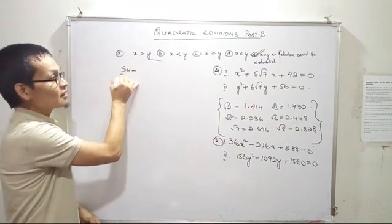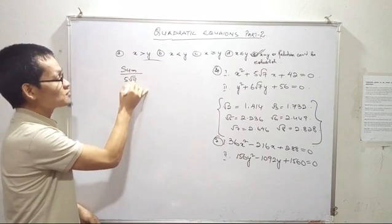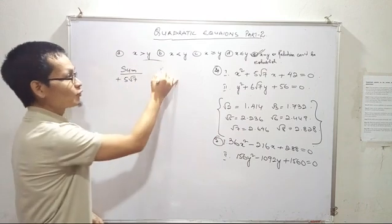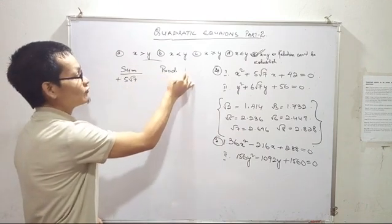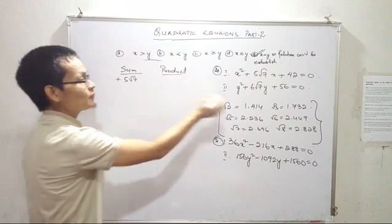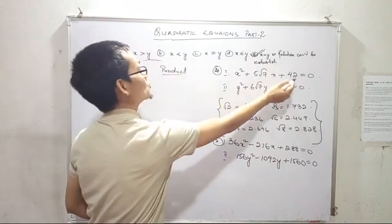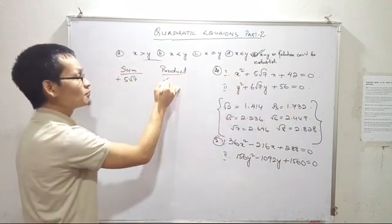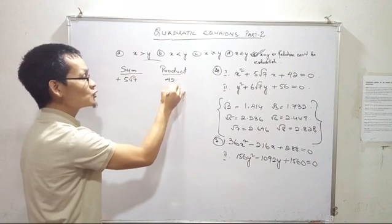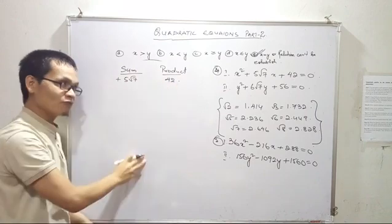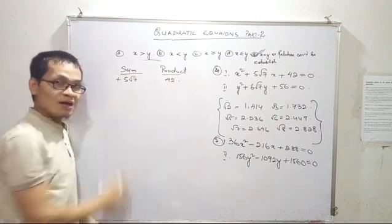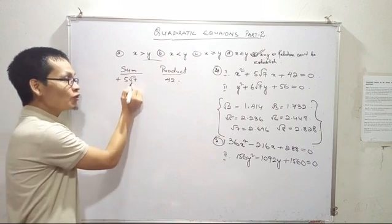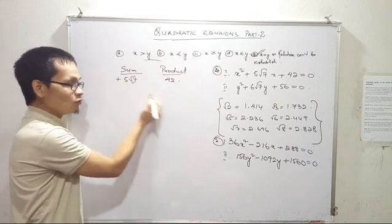Finding the sum and product: the sum is 5 root 7 plus the other term. The product is plus 42. For x squared, check factors: product 42 into 1 is 42. Working with root 7 factors of 42.